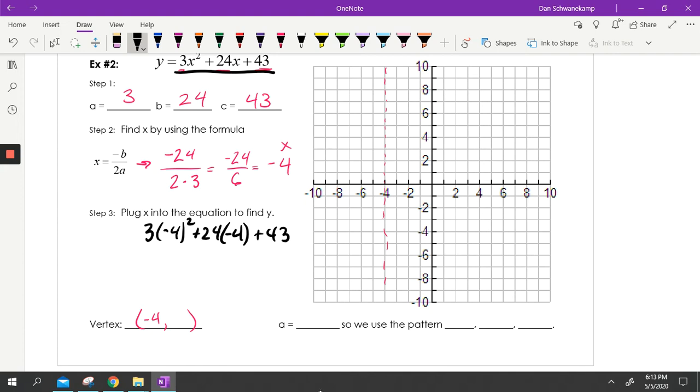I plug it in. I guess I could have done it 3 times 16. That's not worth it. Sorry. I'm getting beside myself. Minus 96 plus 43. And when I do all of that, I get negative 5. So what does that tell me? I'm going to negative 4, negative 5. So boom. Right there. That's going to be my vertex.